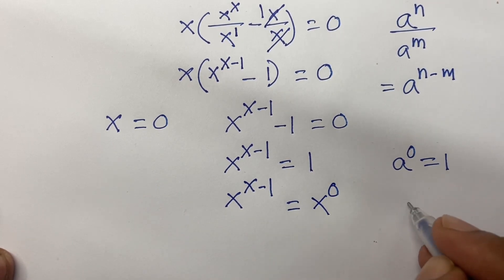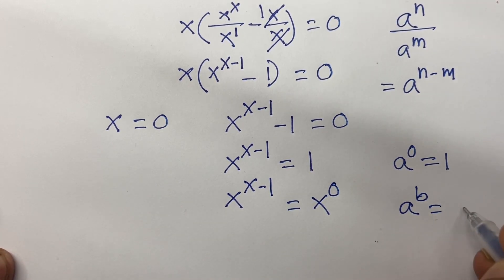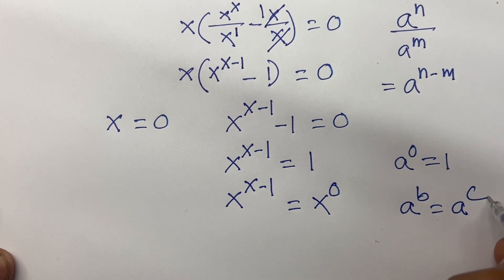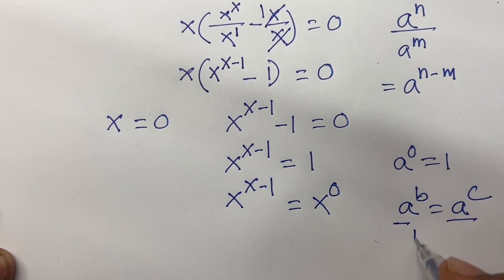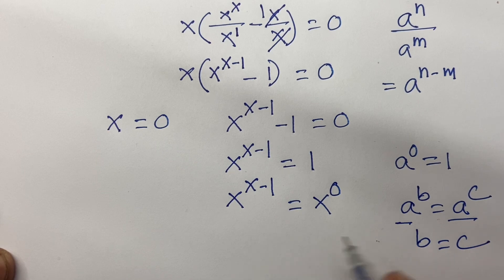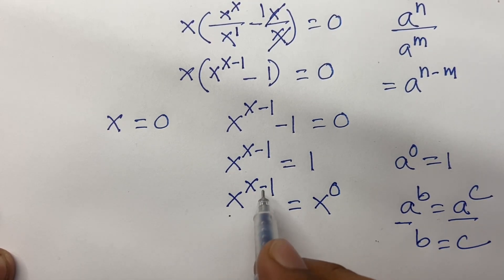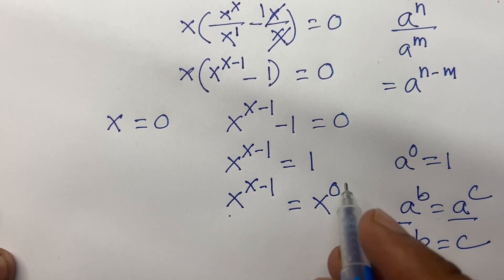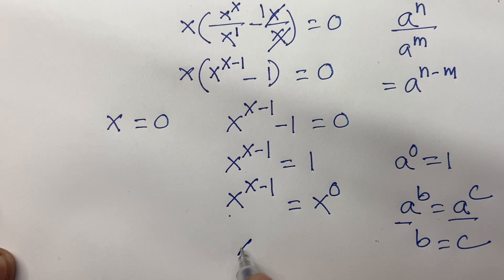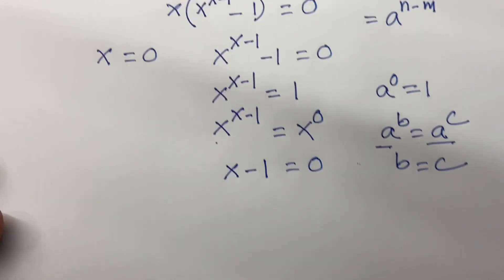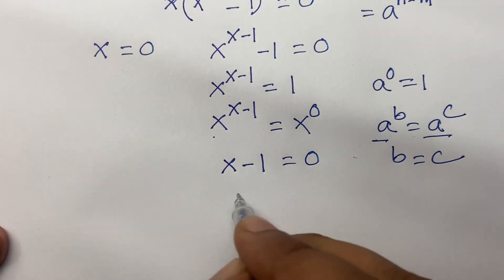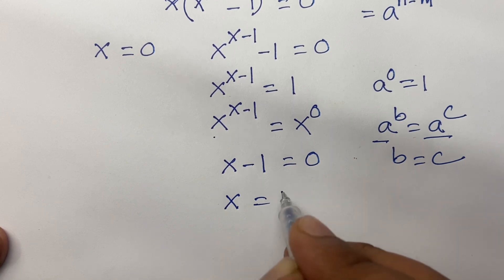We know that if a to the power v equals a to the power c, and the base is the same, then v equals c. Here the base is the same — this is x — so I can say the exponents are equal. So here is x minus 1 equal to 0, which gives x equal to 1.